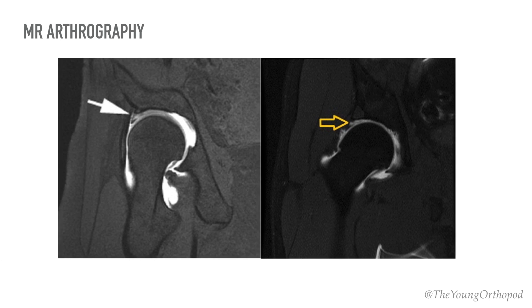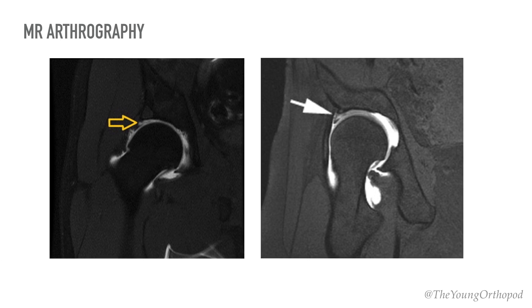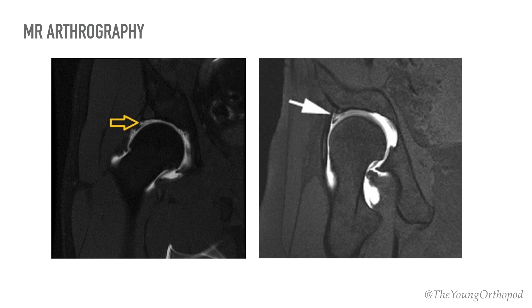Magnetic resonance arthrography is sensitive and specific for detecting labral and chondral lesions. However, there are limitations in detecting undisplaced delaminations of the acetabular cartilage.